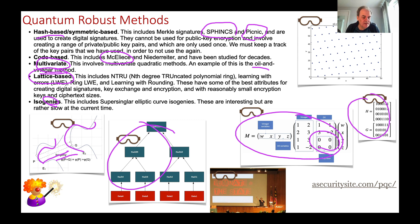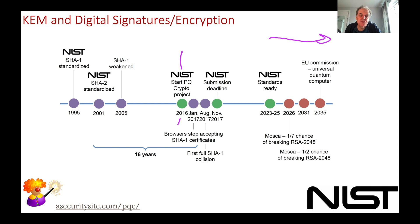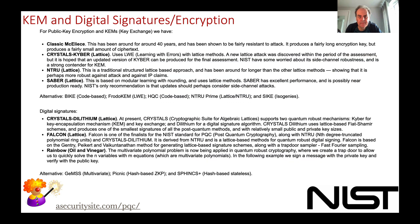So we have hash-based methods, multivariate quadratics, code-based methods, and isogenies — let's look at which is the best for post-quantum cryptography. The timeline shows that in 2016, a post-quantum cryptography project was started by NIST, which has gone through three rounds and is now at the final stages. It's uncertain how long it will take for quantum computers to reach production, but we clearly need to start migrating away from existing public key methods towards post-quantum cryptography.